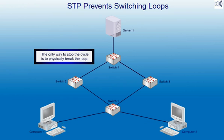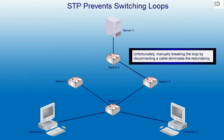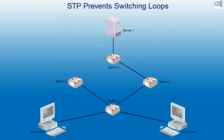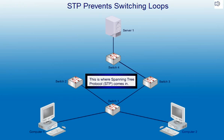The only way to stop the cycle is to physically break the loop. Unfortunately, manually breaking the loop by disconnecting a cable eliminates the redundancy. This is where Spanning Tree Protocol comes in.